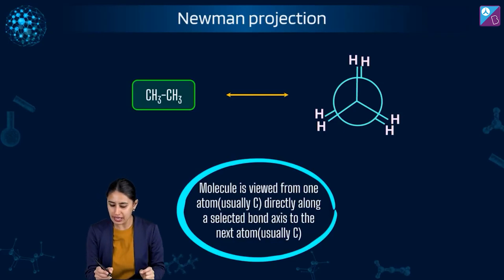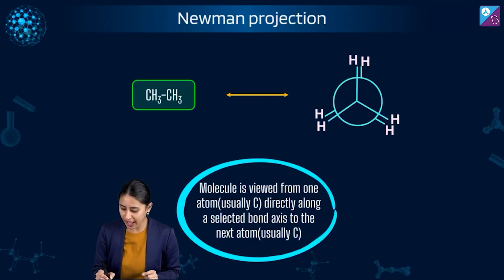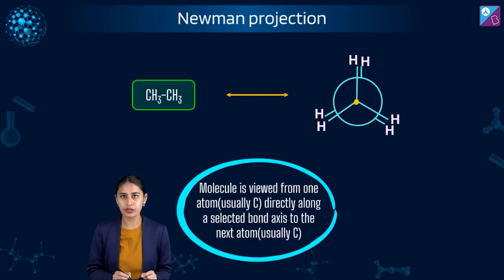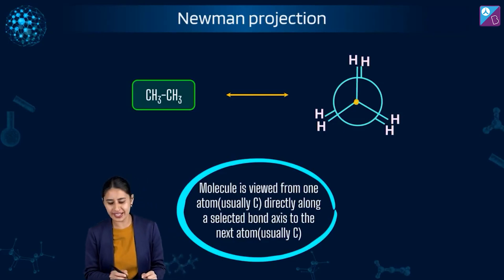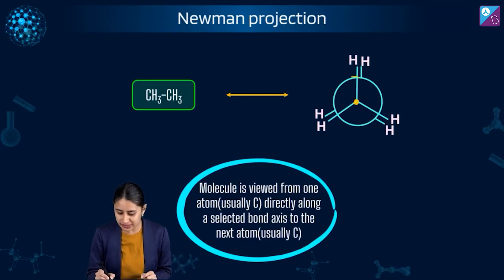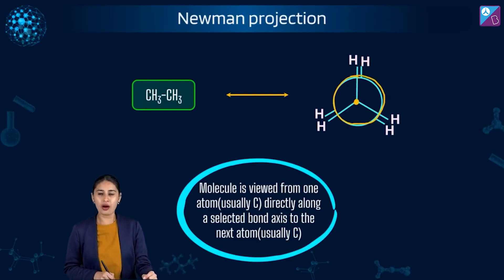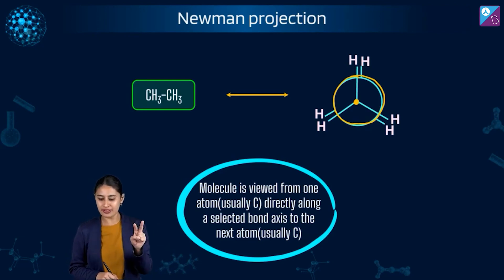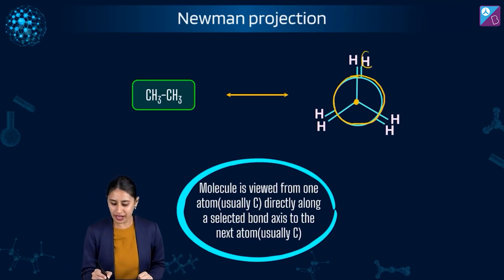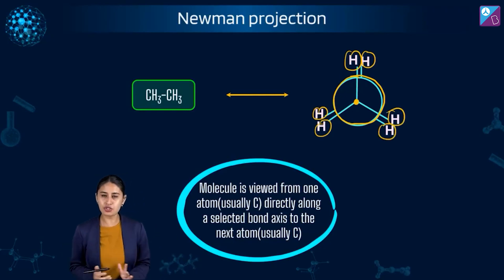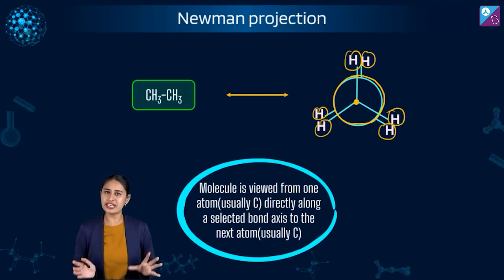In Newman projection, we have one carbon here which is the front carbon, and the full circle represents the second carbon at the back. Two carbons total. Please observe the hydrogens — it is better to observe it in 3D.